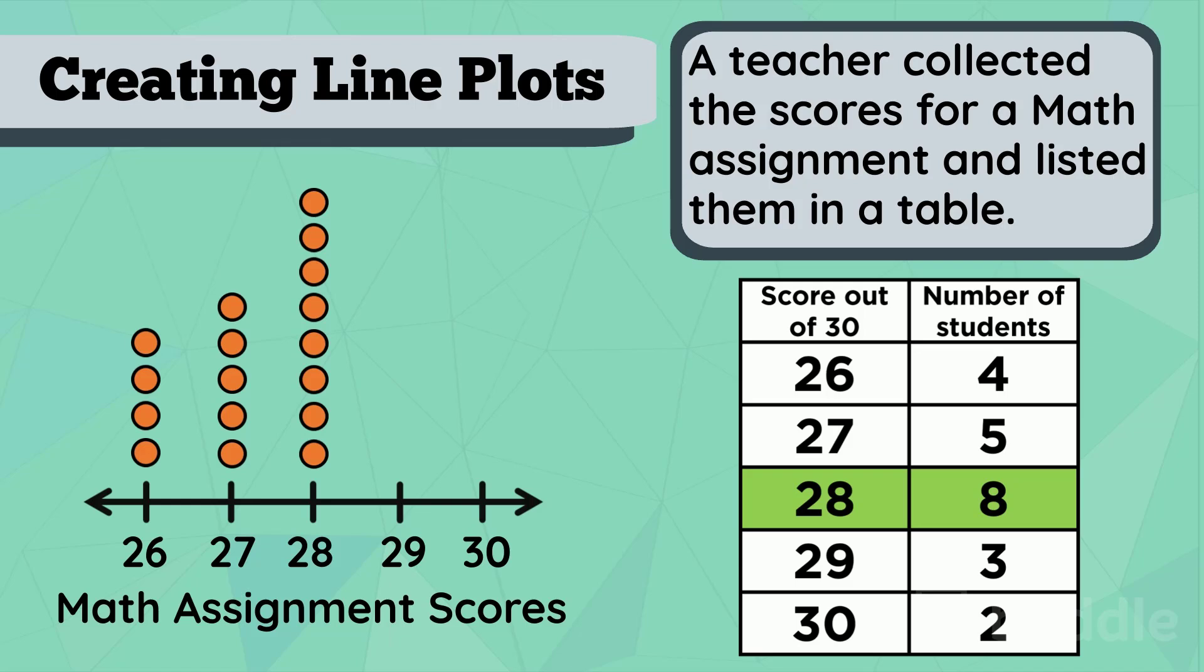After 28, we have 29, where we'll need to draw... Can you guess how many dots? That's right, three dots according to the table. Finally, it looks like two students scored perfect. Let's draw two dots above 30.